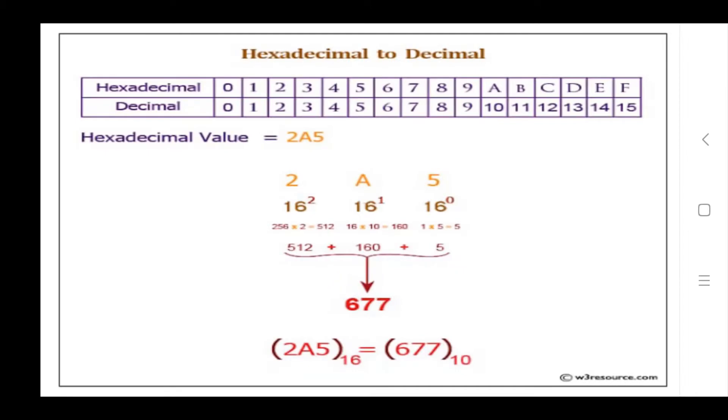Now learn here how the hexadecimal number can be represented in decimal form. I have shown in this figure. Hexadecimal numbers are 0, 1, 2, 3, 4, 5, 6, 7, 8, 9, A, B, C, D, E, F. Decimal form is 0, 1, 2, 3, 4, 5, 6, 7, 8, 9, 10, 11, 12, 13, 14, 15.